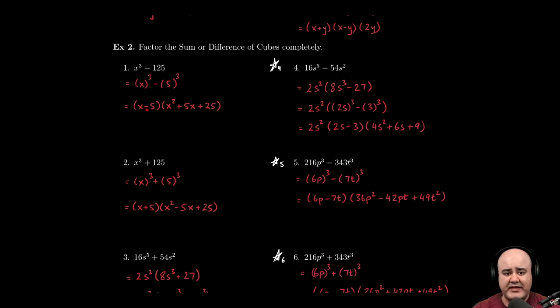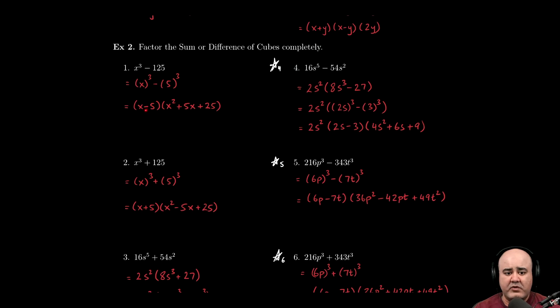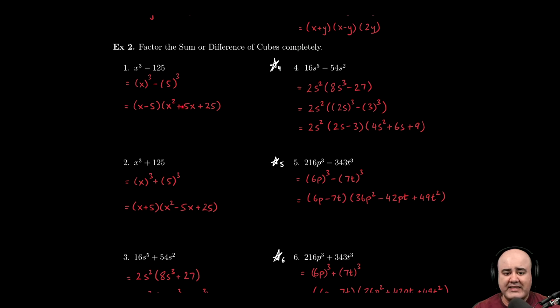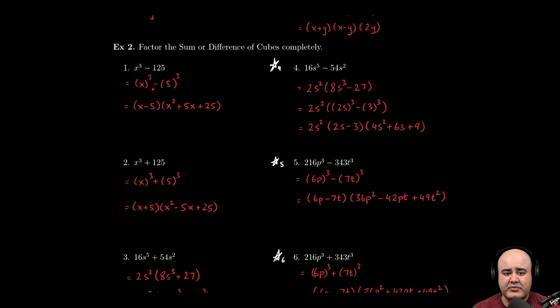So a minus b would just be x minus 5. That's what we have here. Remember that the sign here, the sign on the binomial, is the same as the sign in the problem. So this would just be x minus 5 times the quantity square the first term. So square x, that gives you x squared. This is the opposite sign as in the problem, so if the sign in the problem is a minus, this should be a plus.